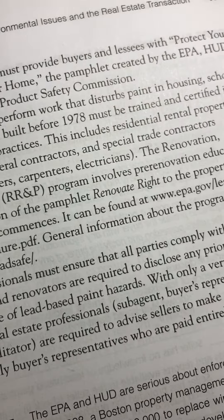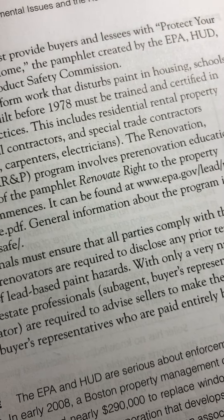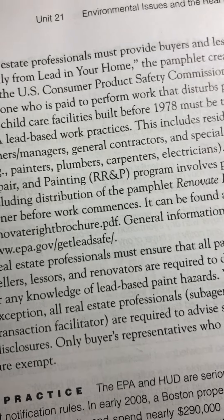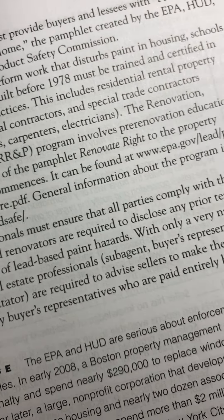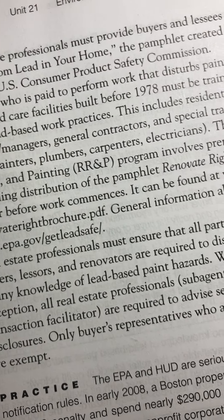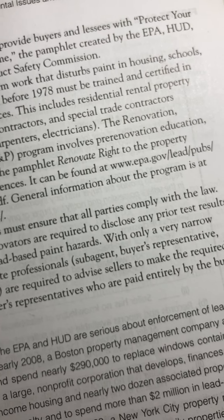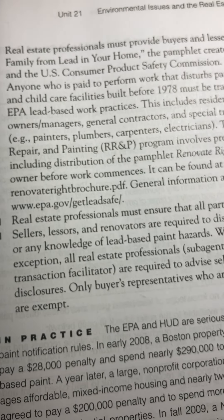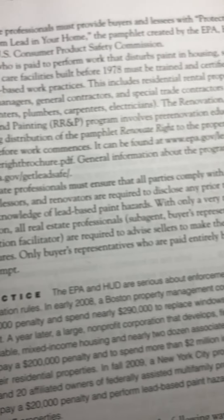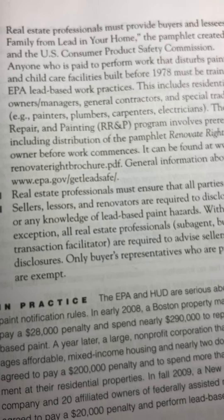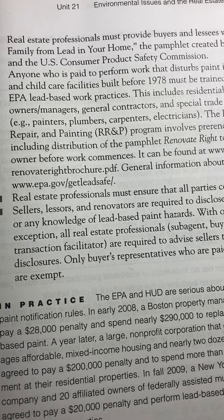This includes residential rental property owners, managers, general contractors, and special trade contractors — for instance, painters, plumbers, carpenters, and electricians. The Renovation, Repair, and Painting (RRP) program involves pre-renovation education, including distribution of the pamphlet 'Renovate Right' to the property owner before work commences. It can be found at www.epa.gov/lead/pubs/renovaterightbrochure.pdf. General information about the program is at www.epa.gov/getleadsafe/. Real estate professionals must ensure that all parties comply with the law.